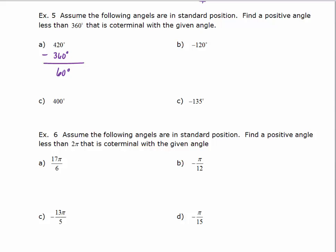Let's try negative 120 degrees. If I want to find a positive angle coterminal with negative 120, I need to add in order to make it positive. So I add 360 degrees, which gives me positive 240 degrees. So 60 degrees and 420 are coterminal, and negative 120 degrees and 240 degrees are also coterminal.